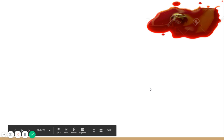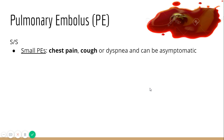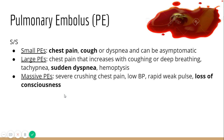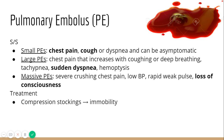Signs and symptoms: smaller PEs present with chest pain, cough, and mild shortness of breath — or they may be asymptomatic. With larger ones, there is sudden dyspnea — the patient is breathing fine and then all of a sudden has severe difficulty breathing, almost as suddenly as an anxiety attack. Massive PEs cause severe chest pain, rapidly dropping blood pressure, increased pulse, and loss of consciousness.